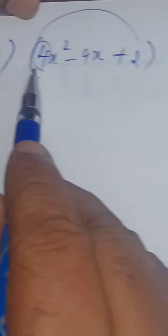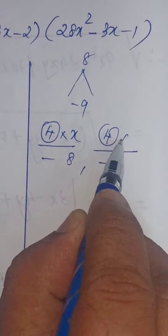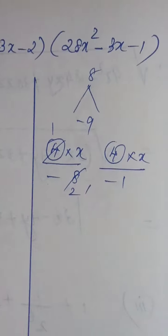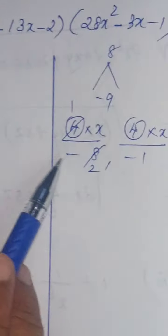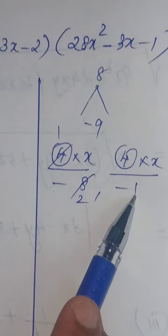Then, coefficient of x squared equals 4. Write 4 in numerator into variable x, 4 into x. Divide by 4 table one time, two times. So, the two factors are 1 into x, x minus 2; 4 into x, 4x minus 1.